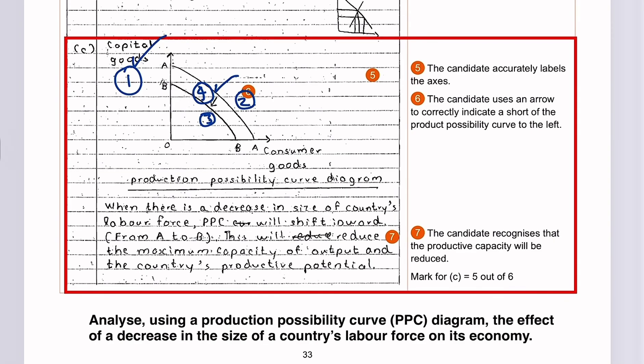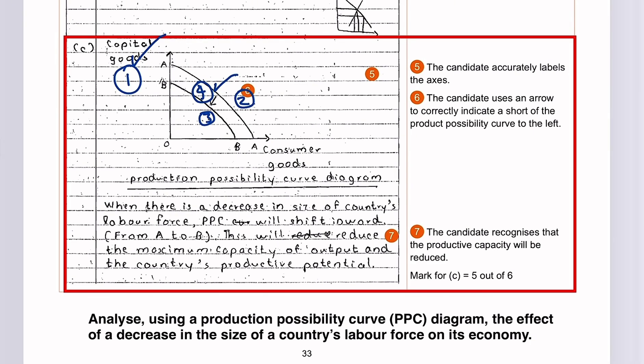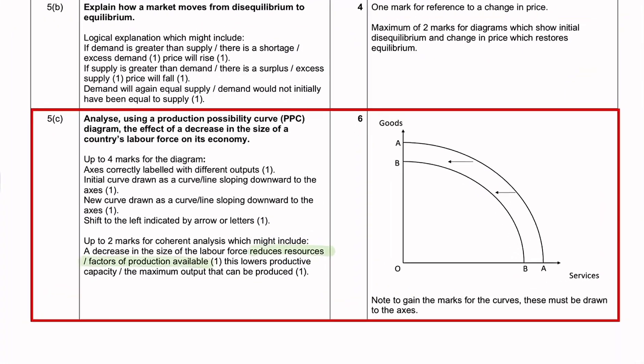And the answer goes as follows, when there is a decrease in the size of a country's labour force, PPC will shift inward from A to B. This will reduce the maximum capacity of output and the country's productive potential. This explanation is a very good explanation of the effect. However, it is missing a reason for the decrease in the size of a country's labour force. And the answer to this is that the country has experienced a reduction in resources, which is, in this case, labour resources.